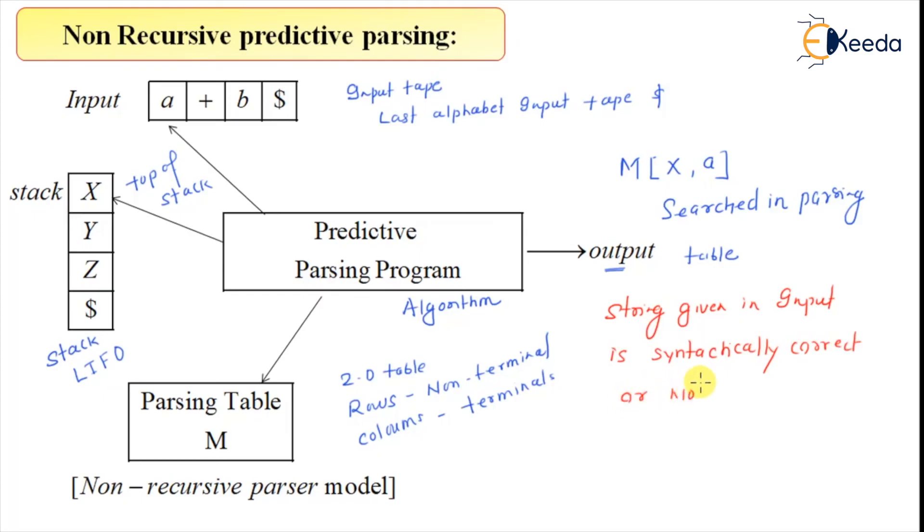So that way it will either announce it is correct or it is not correct. This is a non-recursive parsing model and you will find some similarity between this model and PDA push down automata because both consist of stack.